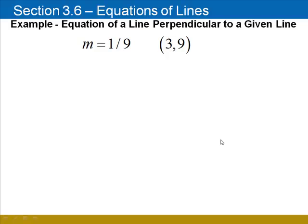Now, we're going to find the equation of a line that has a slope of 1 ninth, passing through the point (3, 9). Begin with y equals mx plus b. Substitute 1 ninth for m. Now, we're going to put in 3 for x and 9 for y into that equation. 1 ninth times 3 is 1 third.